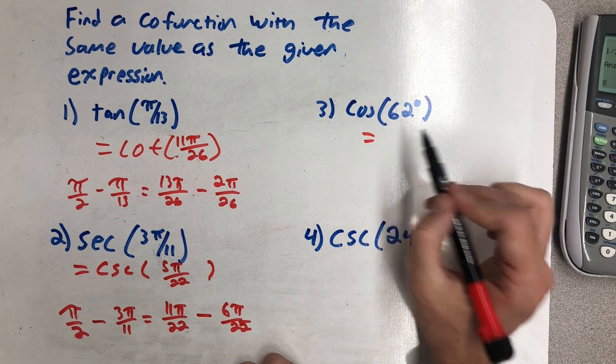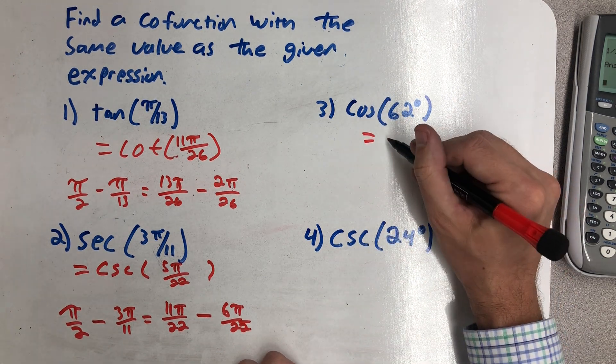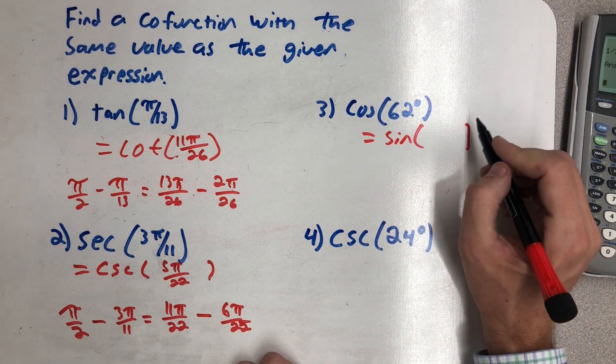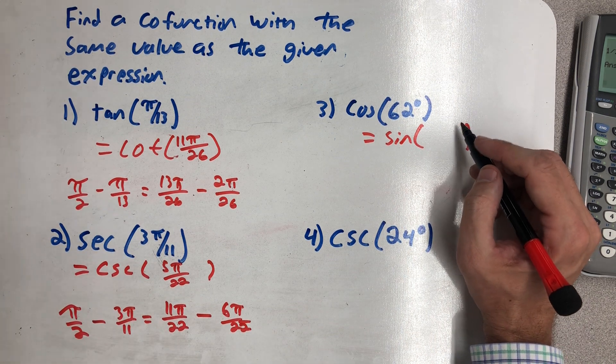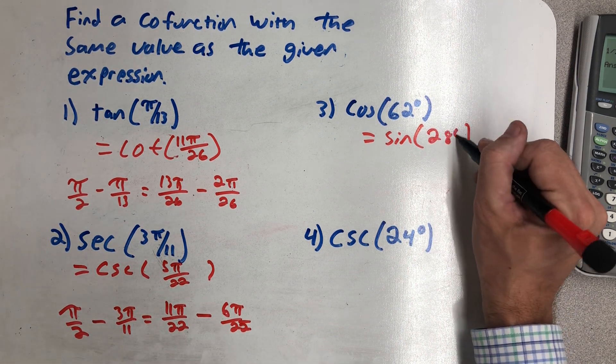All right, got a couple in degrees here. The cofunction for cosine is sine. And the complementary angle to 62 degrees would be 28 degrees.